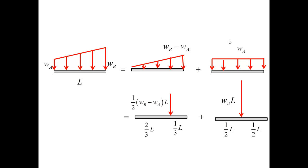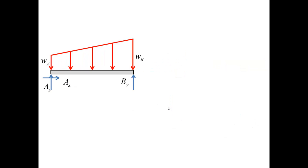These loads are associated or statically equivalent to the concentrated forces shown here. For the triangle, the force is shifted so that it divides the beam in the ratio 2 to 1. The magnitude of the force is equal to the area of the triangle. For the rectangular load, the force is W times L and it is applied in the middle. Therefore, the original free body diagram for the entire beam is statically equivalent to this one.